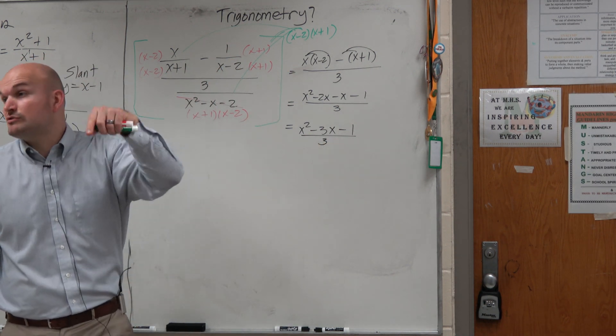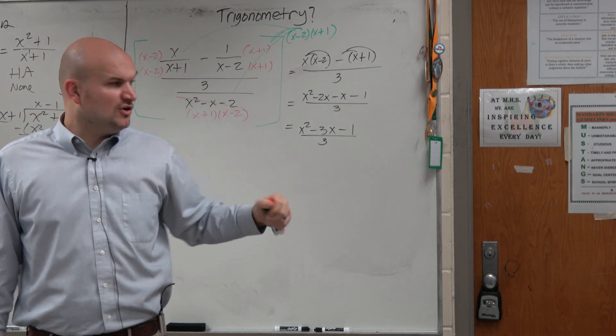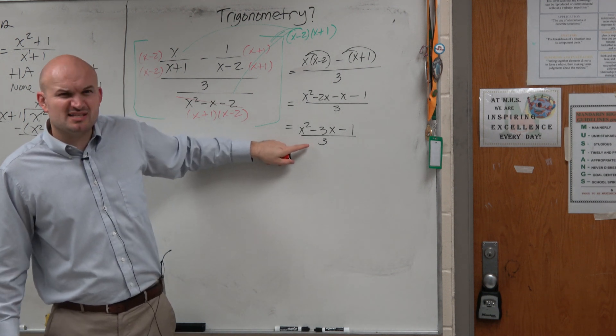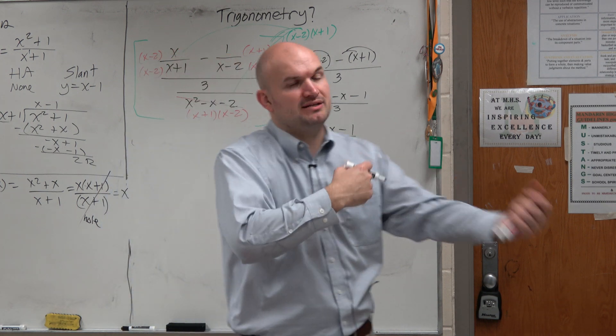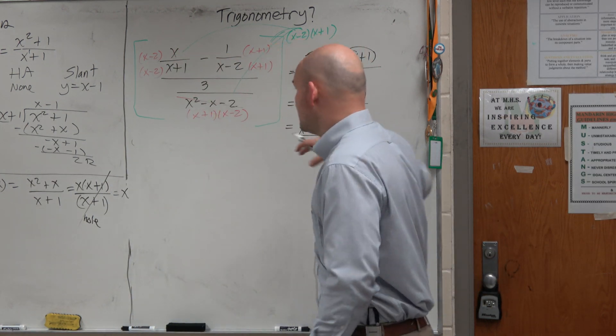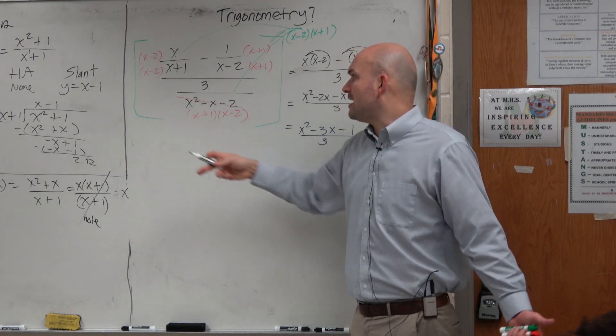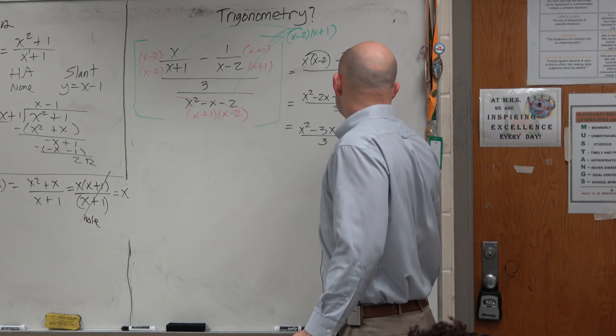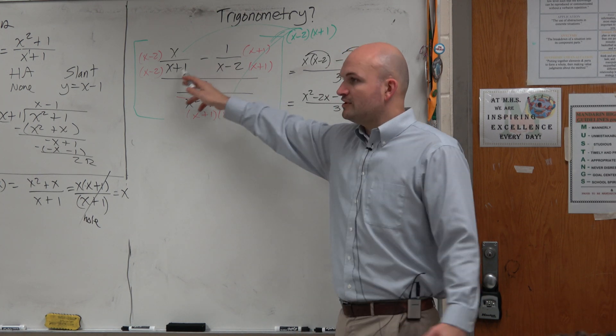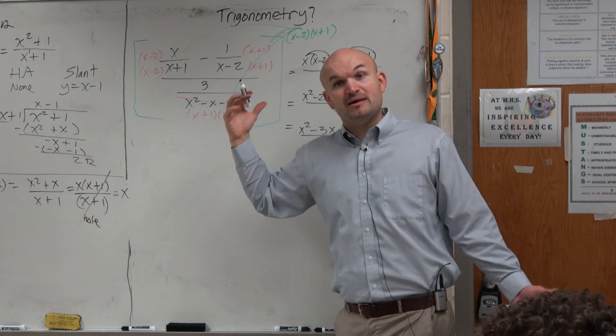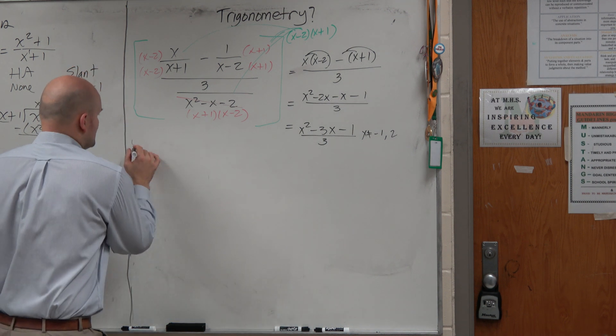And then the other thing we want to talk about is the restrictions. Remember, guys, the restrictions are the values that x cannot equal. Well, if you look at the simplified problem, is there any values that x cannot be? No, but remember when we were talking about restrictions, adding, subtracting, multiplying, dividing, and complex fractions, we didn't just care about the simplified result. We also had to look over here and say the original problem, I know x cannot equal negative 1 and 2 because that would have made my denominator 0 in my original problem. So then we talked about those restrictions.